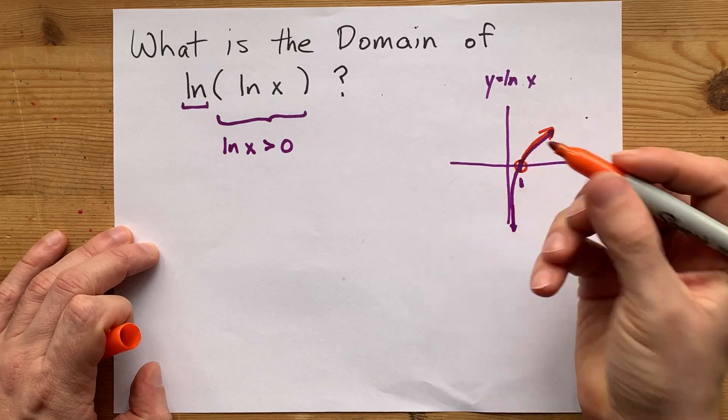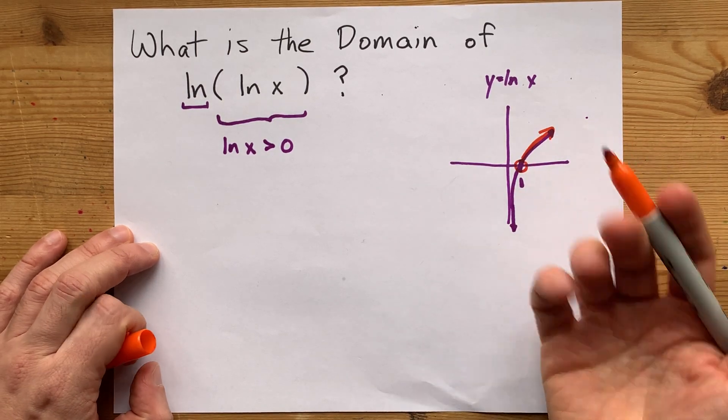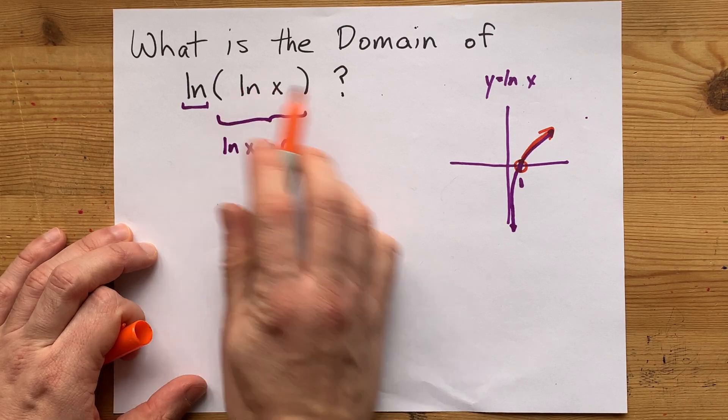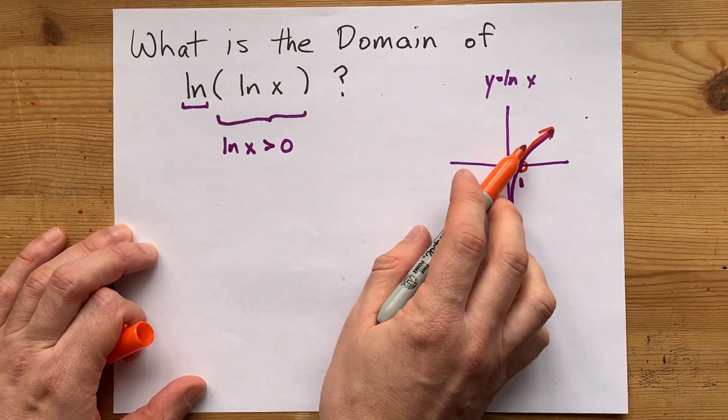Now, what I'm actually looking at here are the output values, like the y values, because when you plug an x in here, you're going to take the ln of it and it's going to transform it into a new number.